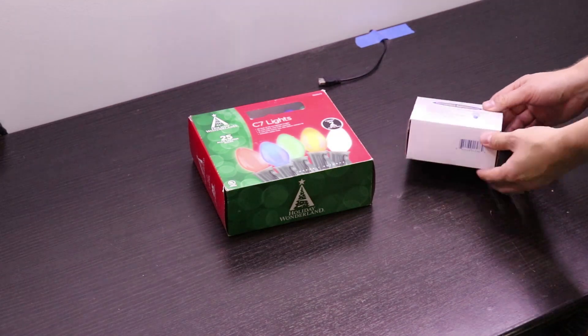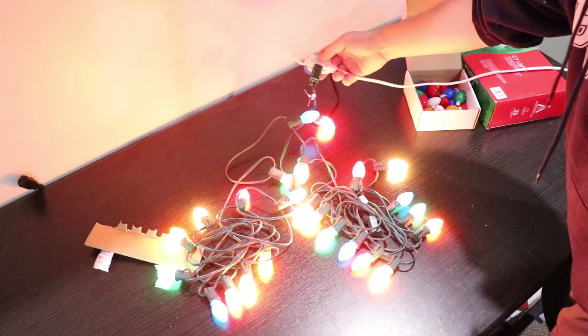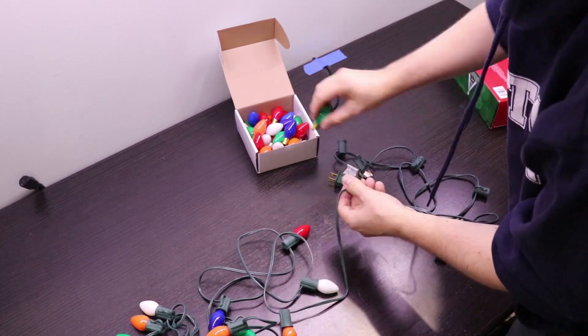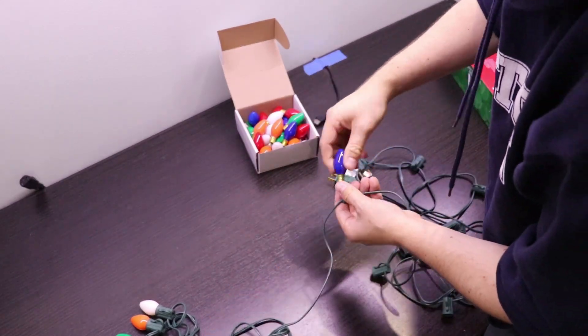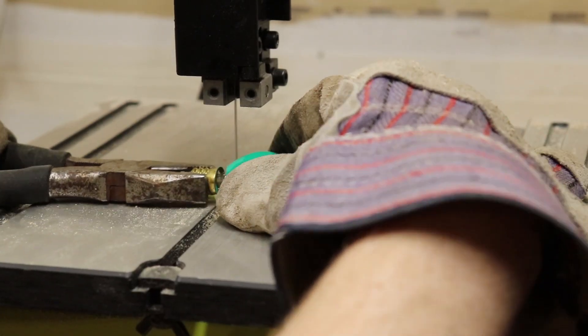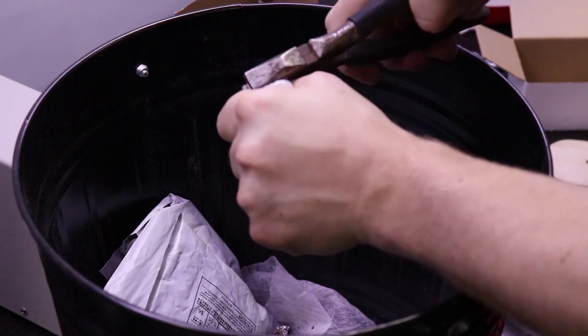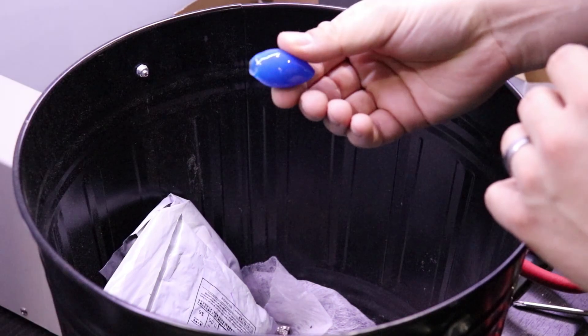The first thing I did was open my box of C7 Christmas lights and plug them in to make sure they worked. Then I removed each bulb from the string in preparation for hollowing them out. I tried several unsuccessful ways of hollowing these bulbs out but settled on using a pair of pliers and brute force. This ended up being a quite difficult and pretty frustrating process.